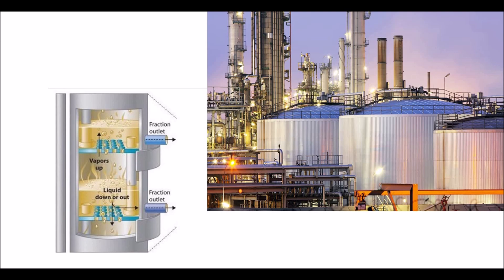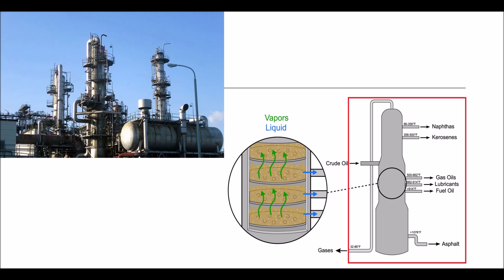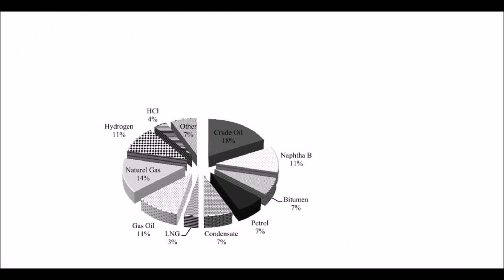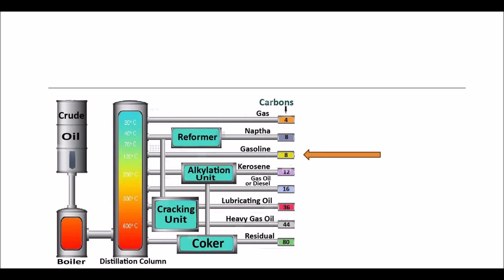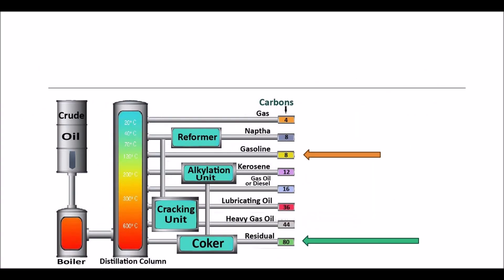The key process happens in the distillation chamber, where different types of oils are formed by distilling at different temperatures. For instance, gasoline is distilled at a cooler temperature, whereas residual oil is produced by distilling at a higher temperature.